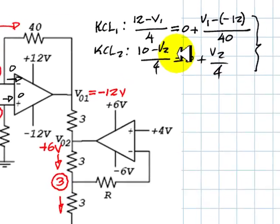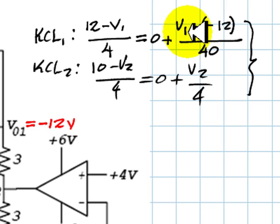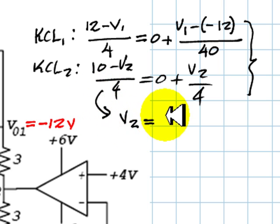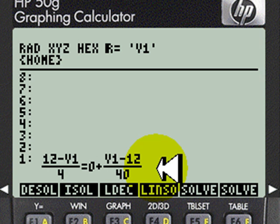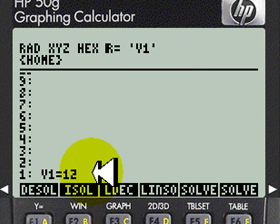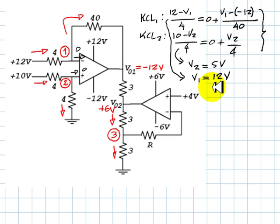So we solve the second one, V2, and we obtain from this equation that V2 has to be 5V, same as before. And we solve the equation at the top for V1. That is the equation and we are going to solve for V1. V1 is 12V, positive 12V.